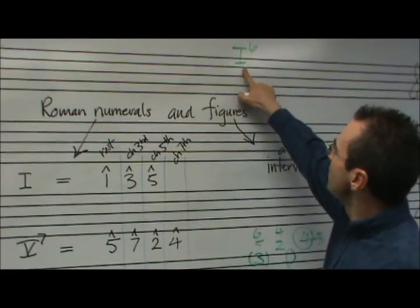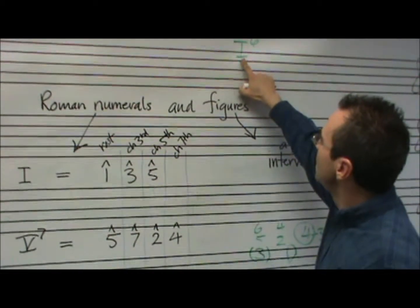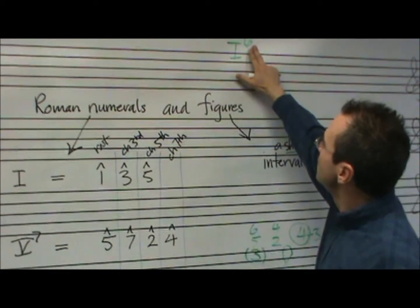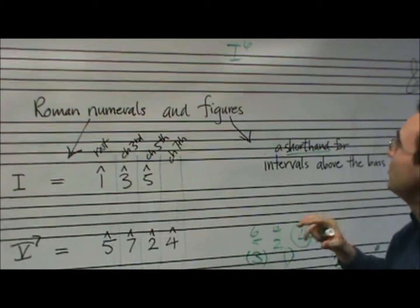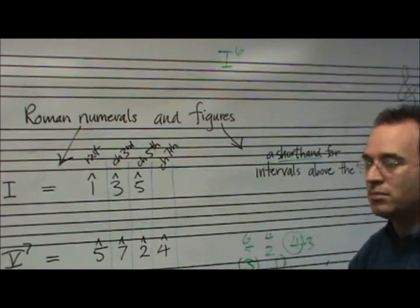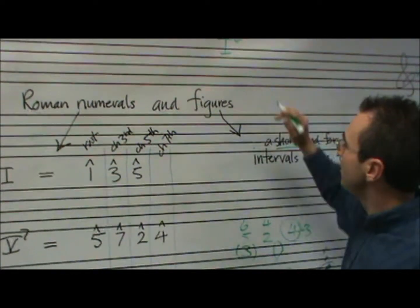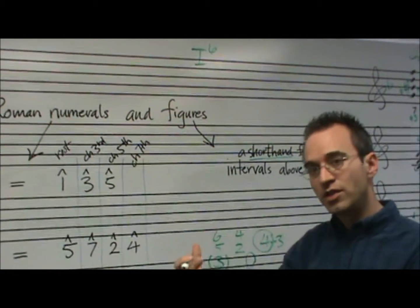The idea of Roman numeral comes in later. This, the figure, is something that goes way back - it goes back into the Renaissance a little bit. So that's an old kind of idea, the figures. And it was just figured bass.